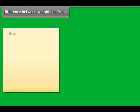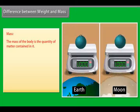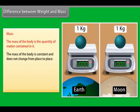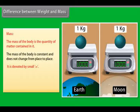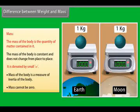Mass: the mass of the body is the quantity of matter contained in it. The mass of the body is constant and does not change from place to place. It is denoted by small m. Mass of the body is a measure of inertia of the body. Mass cannot be zero.